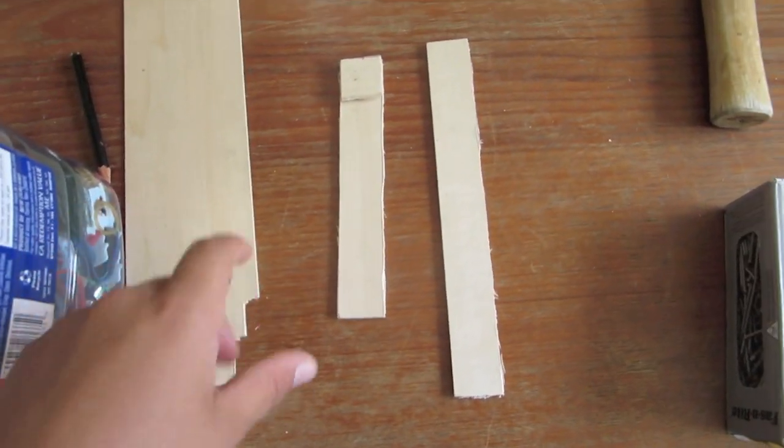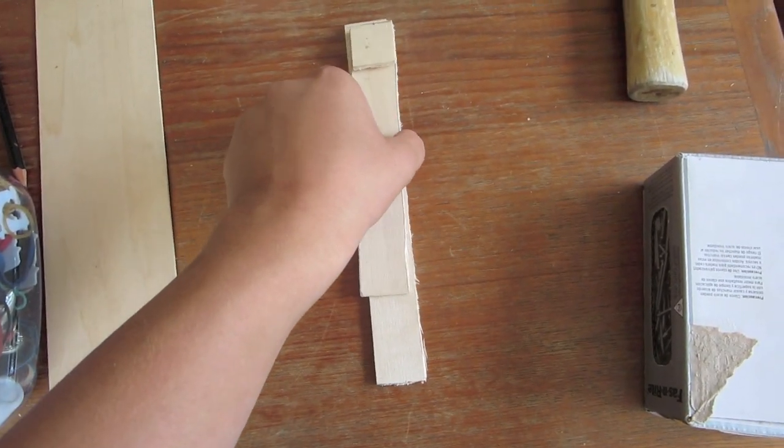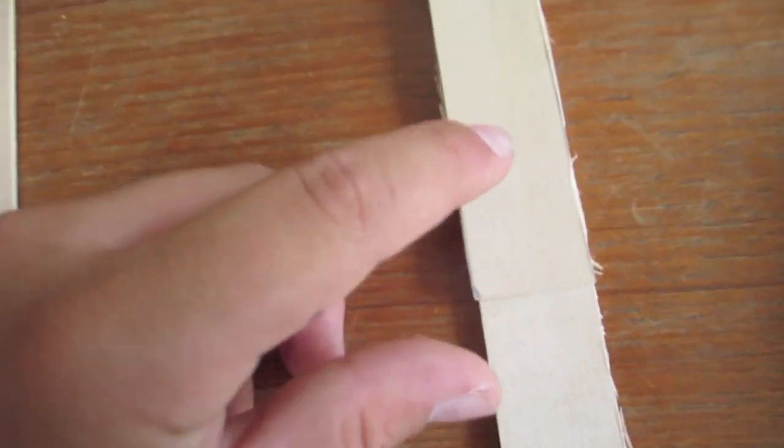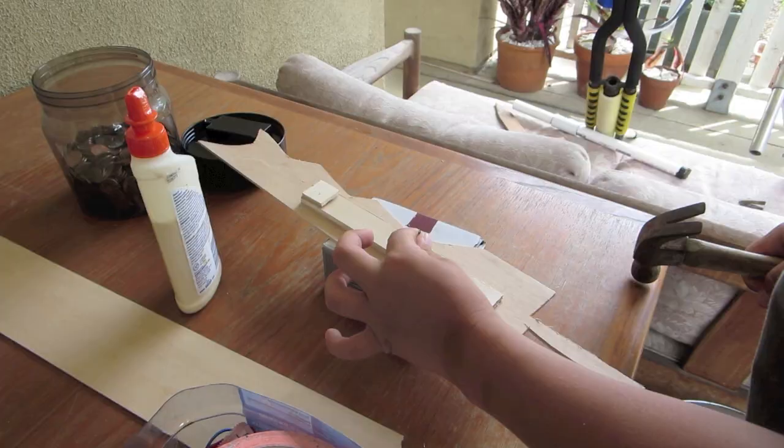Next thing you need to do is attach the swinging arm to the main body. You simply have to put it on here and nail in place right around here. So you simply put the nail right here and hammer it in.